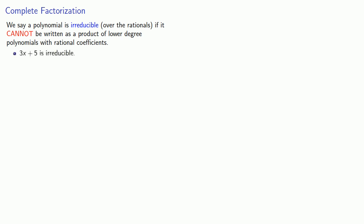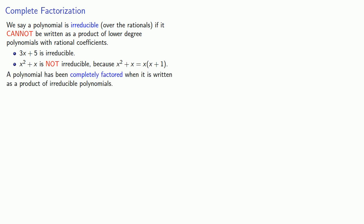Well, how do we know when to stop? We say a polynomial is irreducible over the rationals if it cannot be written as a product of lower degree polynomials with rational coefficients. So 3x + 5 is irreducible. x² + x is not irreducible because x² + x is x times x + 1. And so we say that a polynomial has been completely factored when it is written as a product of irreducible polynomials.